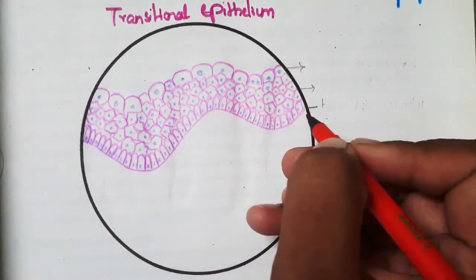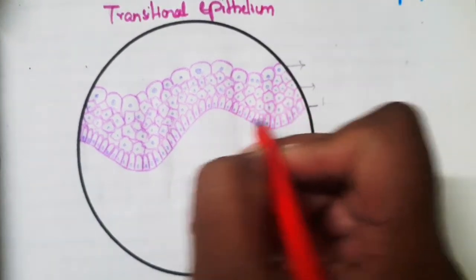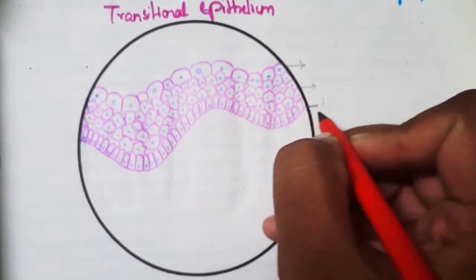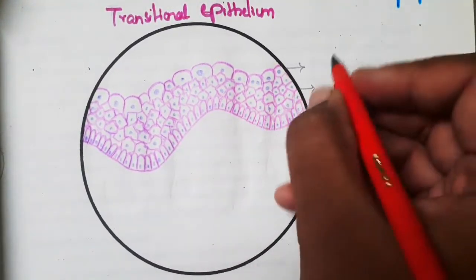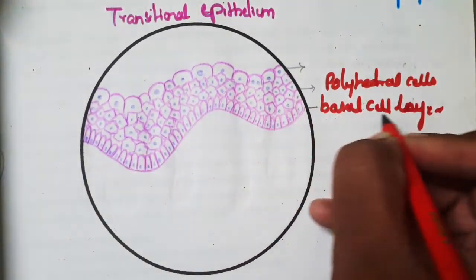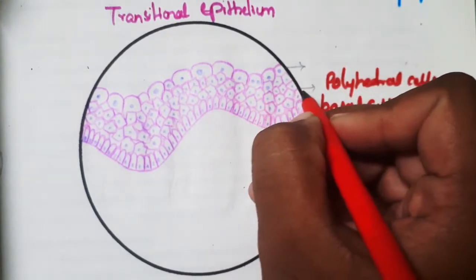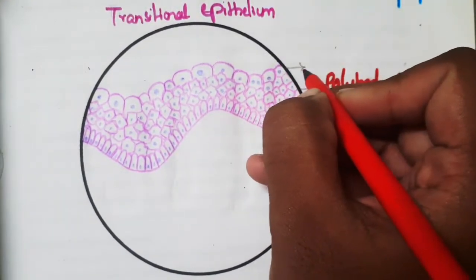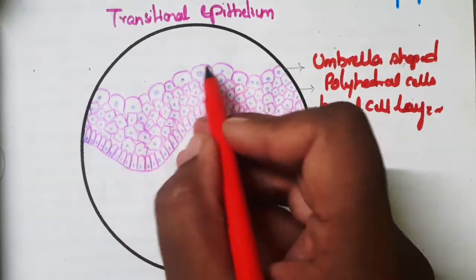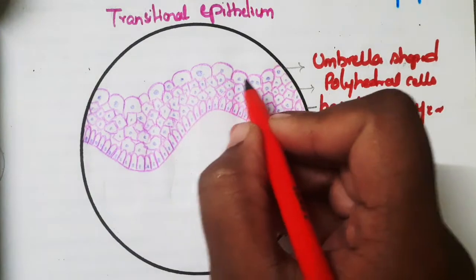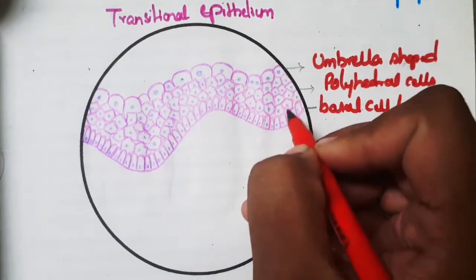In the relaxed state, we see multiple layers. The first is the basal cell layer on the basement membrane, where cells are low columnar or cuboidal. Above this are the intermediate polyhedral cells in the middle layer. The superficial top cells are umbrella-shaped — the apical cells facing the luminal surface are thick and umbrella-shaped.